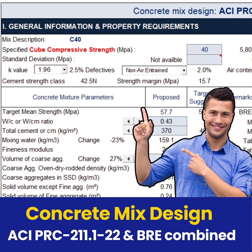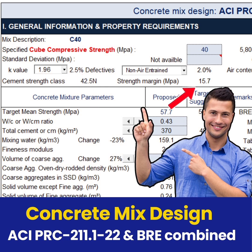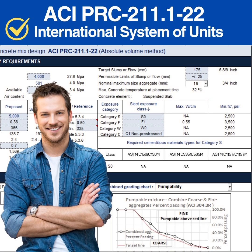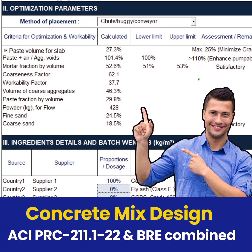After specifying the cube strength, select the K value according to percent of defectives as specified, and automatically the strength margin will provide a reference to BRE procedures. The rest will be done according to ACI 211.1 of the 2022 version. This includes the optimization criteria that guides you to adjust the mix proportion in line with recommended range values to suit the placement method.